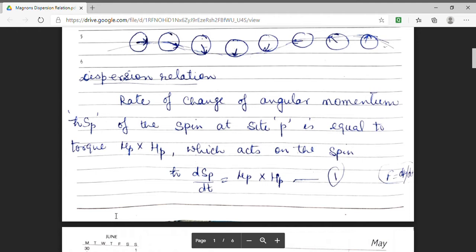Here, what we are doing? We are taking angular momentum and angular momentum is h cross sp. Here, what does sp means? We are taking a spin at a site which is denoted by small p letter and this rate of change of angular momentum can be expressed as torque and the torque will be equal to mu p into hp.